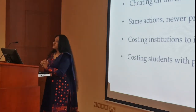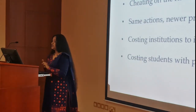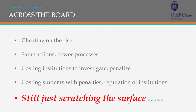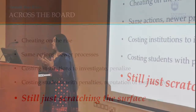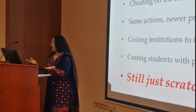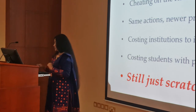Overall, cheating is on the rise — same actions, newer processes like contract cheating. It is costing institutions to investigate and penalize, and it is definitely costing students through penalties and damage to institutional reputation. However, all of this is still just scratching the surface — we are nowhere near understanding the full problem. Does it even exist here? How bad is it? Can we do something about it? That's where we need your help.